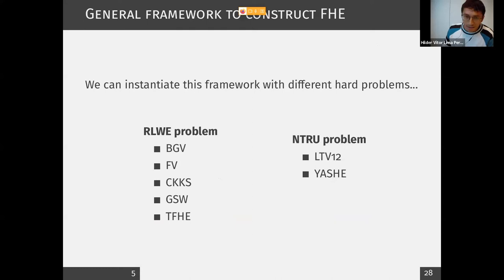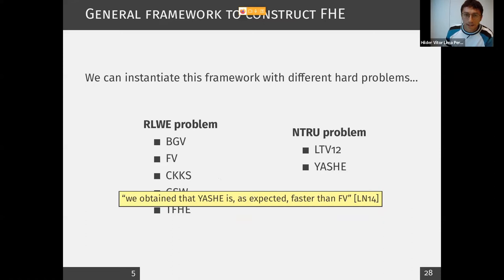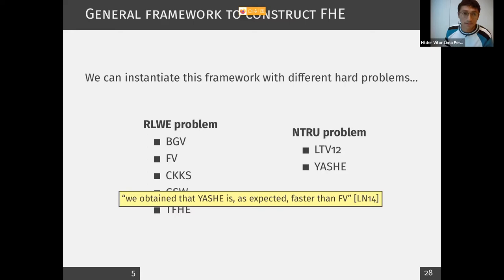We can instantiate this general framework with several different hard problems. In particular, if we use the RLWE problem, we have already several well-known schemes like BGV, FV, CKKS, GSW, TFHE, FEW, and so on. People have also tried to use the NTRU problem to construct FHE. At the time, YASH was pretty efficient. There is this paper by LePouın and Ehring from 2014 that says the result of their practical experiments — YASH is, as expected, faster than FV. So why was YASH faster than FV, and why were they expecting it to be faster? This is one thing we are going to see now.